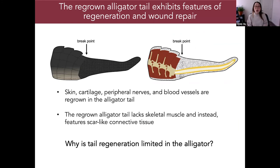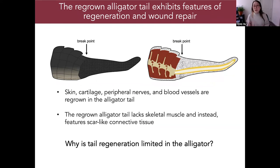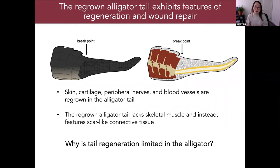Overall, the regrown alligator tail exhibits features of regeneration — regrowth of skin, cartilage, peripheral nerves, and blood vessels — but also features of wound repair, primarily due to the lack of skeletal muscle and abundance of scar-like connective tissue. We were curious why some tissues have regenerative capacity and others, like skeletal muscle, do not in the alligator.